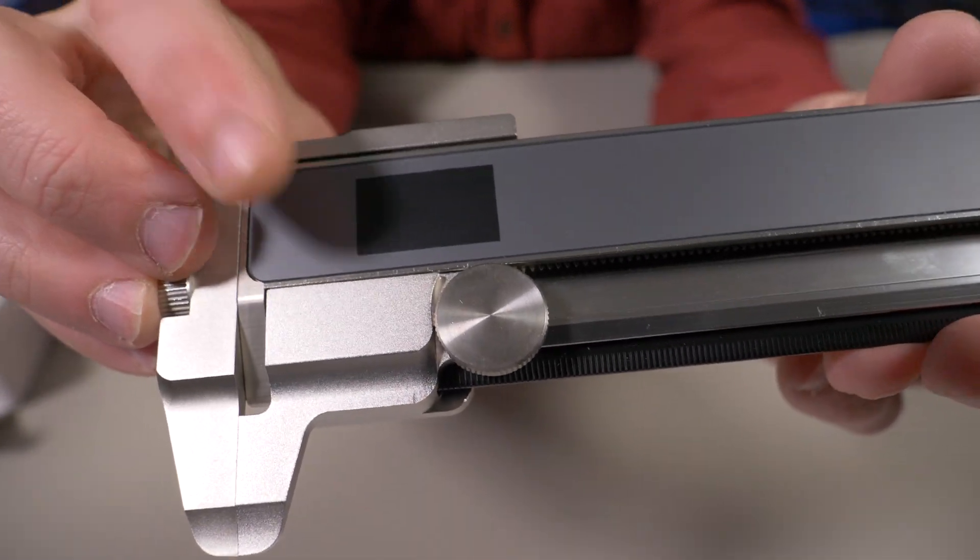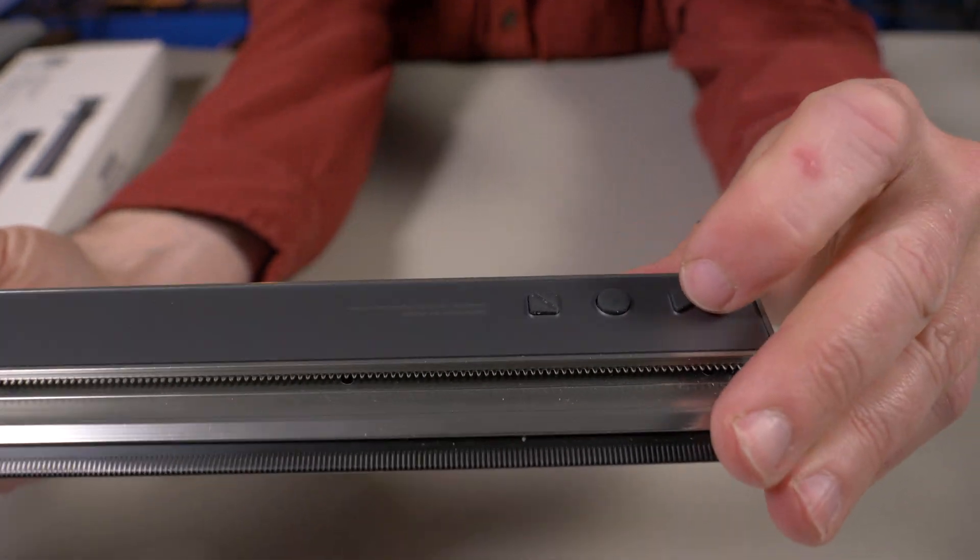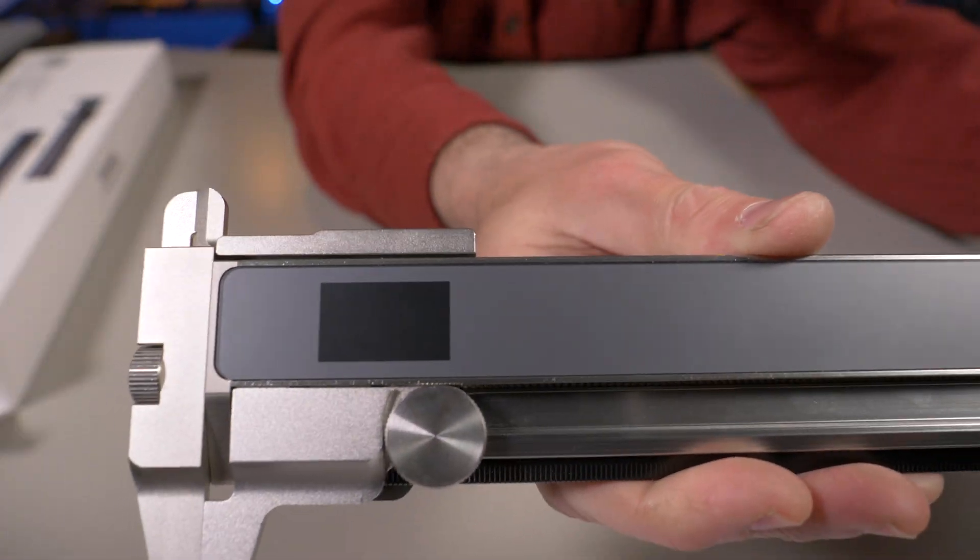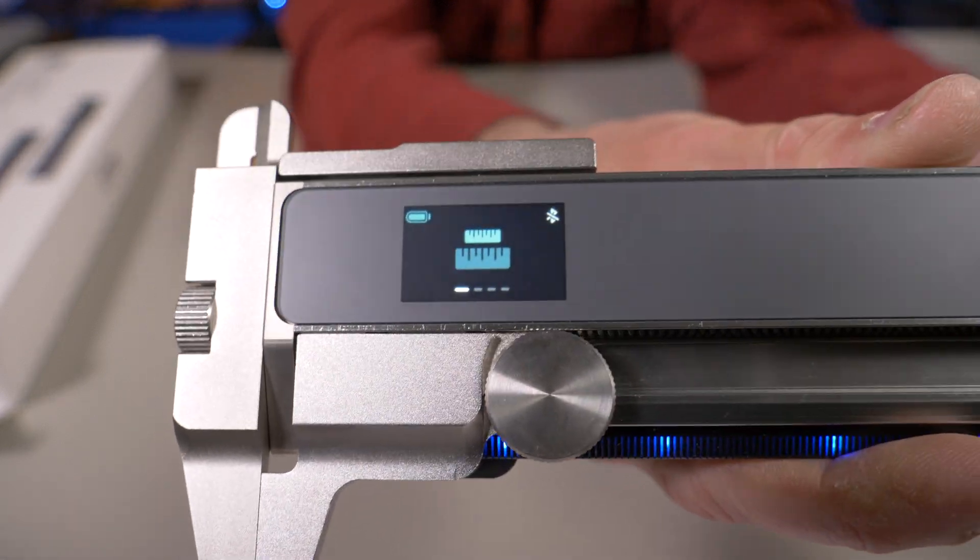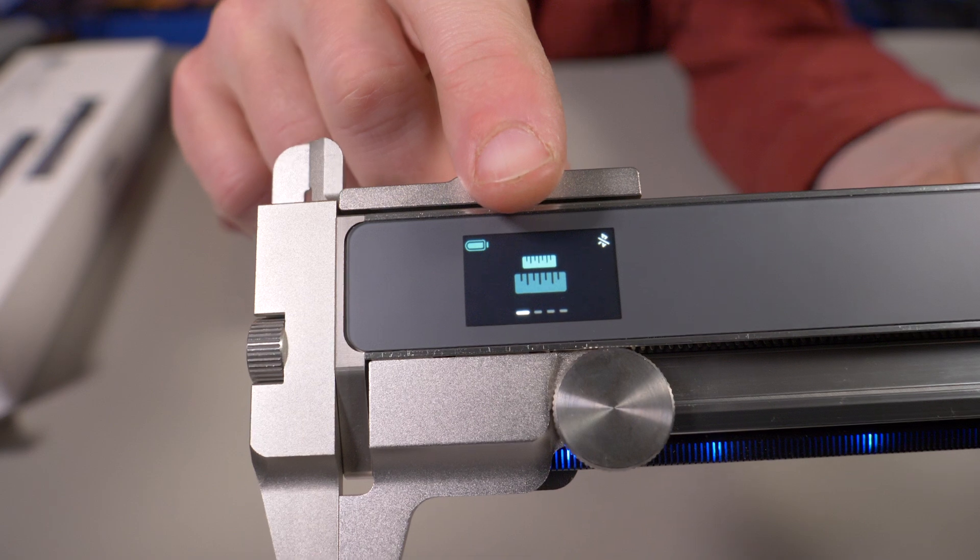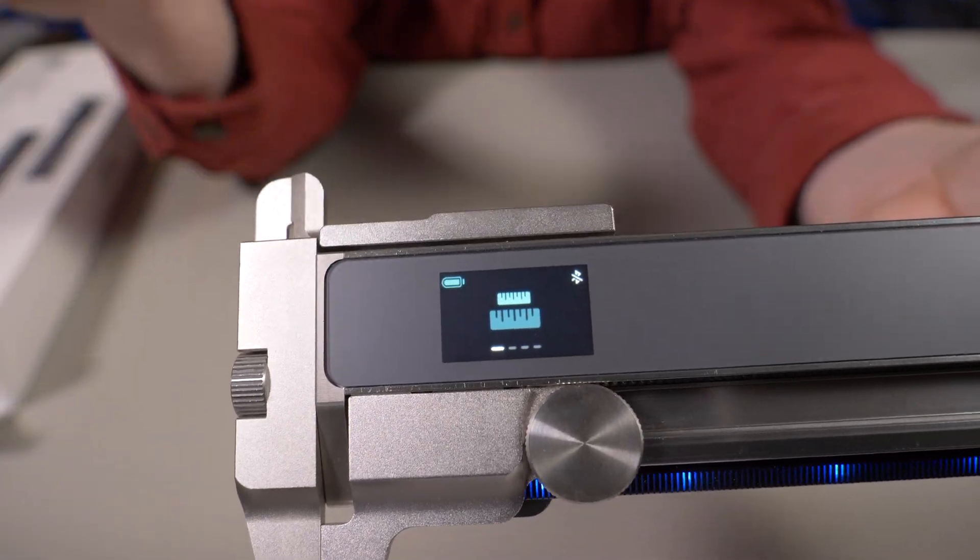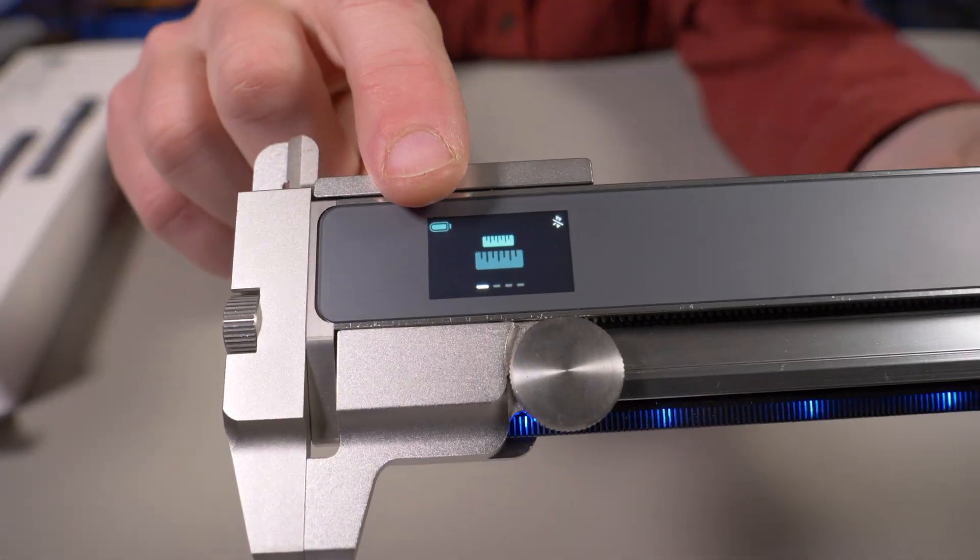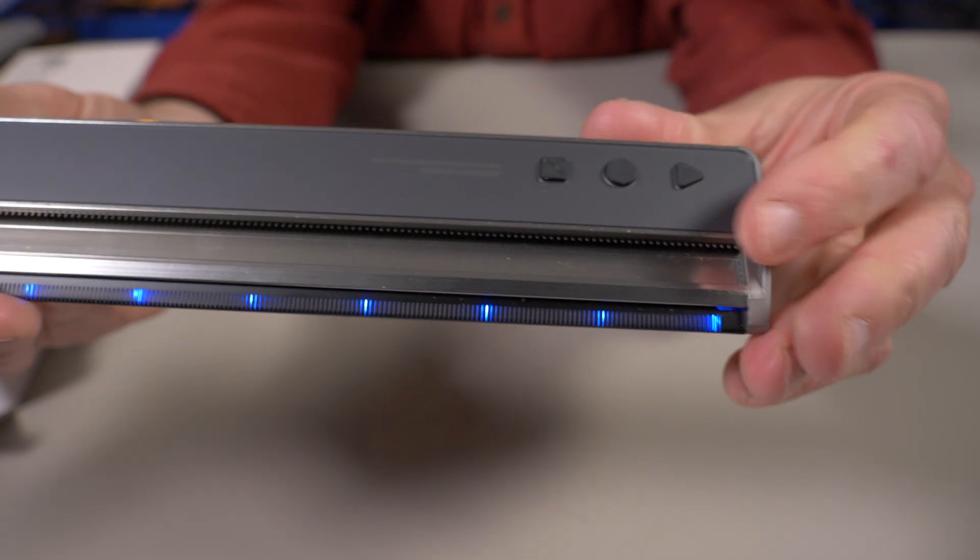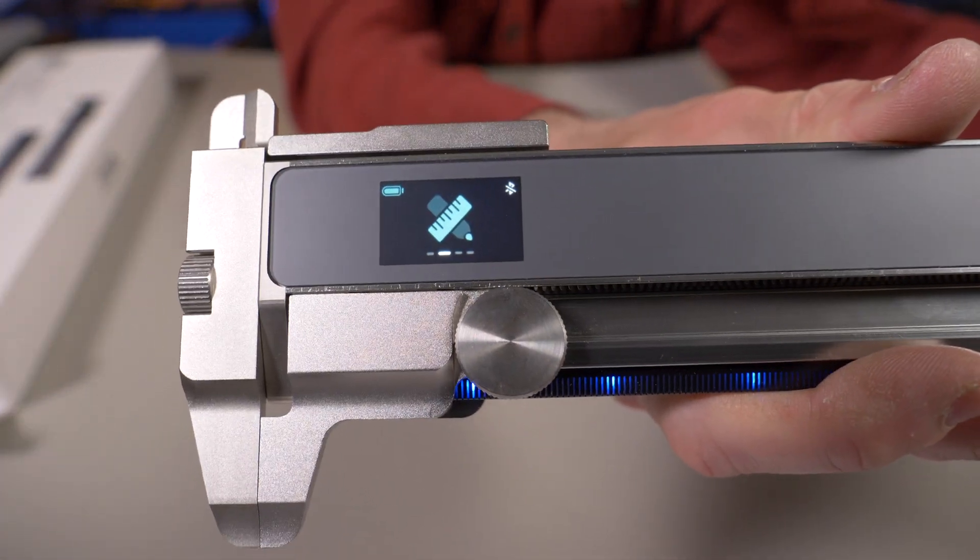Right here near the caliper you can see that 1.14 inch full-color LCD display. To turn that on, you just press and hold this little triangle button right here. I'll do that for you real quick so you can see what that display looks like. You can see right there on the screen which mode I'm in, if we're connected to Bluetooth—which yes, there is an app for this ruler—and right there is my battery life.